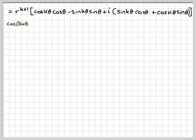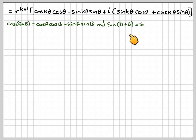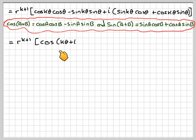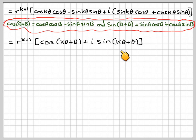Now from our trigonometry, cos(a + b) = cos a cos b − sin a sin b — you might recognise that pattern. And sin(a + b) = sin a cos b + cos a sin b — you might recognise that pattern. So a is going to be kθ, b is going to be θ. So this will become r to the k+1, cos(kθ + θ), plus i sin(kθ + θ).